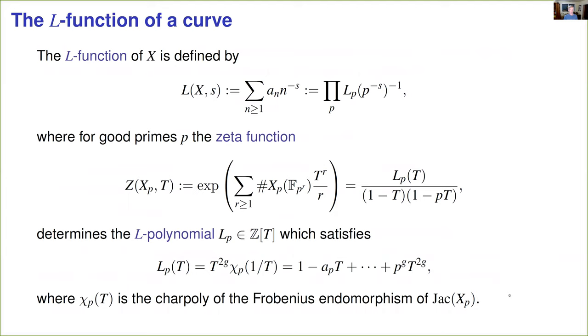So let me recall the definition of the L-function of a curve. This is a Dirichlet series defined as an Euler product, and at least to good primes, the polynomials that appear in the Euler product come from the numerator of the zeta function of the reduction of the curve at p. That zeta function is defined in terms of point counts, and its numerator is an integer polynomial of degree 2g, whose linear term comes from the trace of Frobenius, and it's reciprocal to the characteristic polynomial of the Frobenius endomorphism of the Jacobian of the curve.